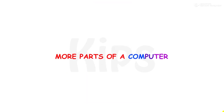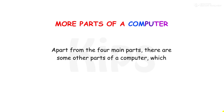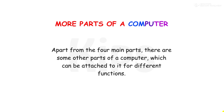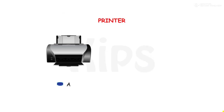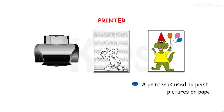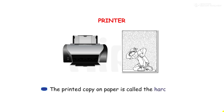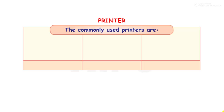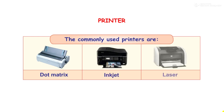We will discuss more parts of a computer. Apart from the four main parts, there are some other parts of a computer which can be attached to it for different functions. A printer is used to print the text or pictures on paper. It can print both in black and white or color. The printed copy on paper is called the hard copy. The commonly used printers are dot matrix, inkjet and laser.